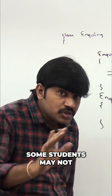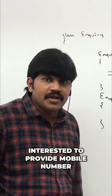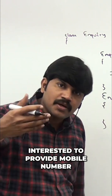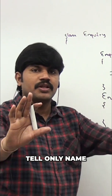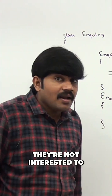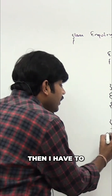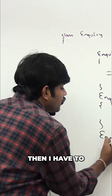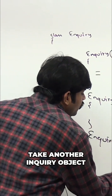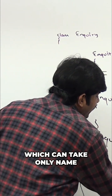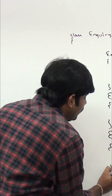Some students may not be interested to provide mobile number or mail ID. They are going to tell only their name — they are not interested to share personal information. Then I have to take another enquiry object which can take only name as the argument.